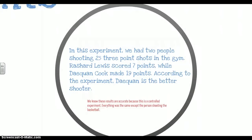In this experiment, to recap, we had two people shooting 25 three-point shots in the gym. Rashard Lewis scored seven points while Daquan Cook made 19. According to this experiment, Daquan is the better shooter. We know these results are accurate because this is a controlled experiment. Everything was exactly the same except the person shooting the basketball, and that's what makes this a good controlled experiment.